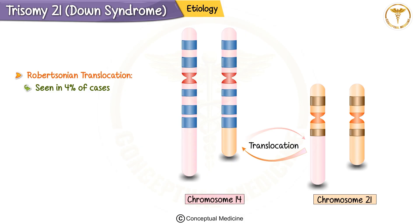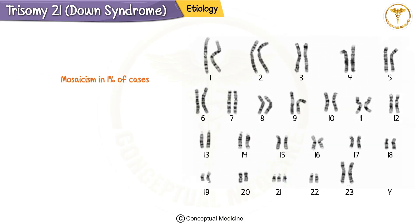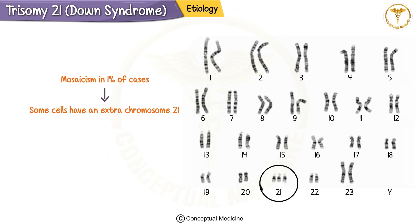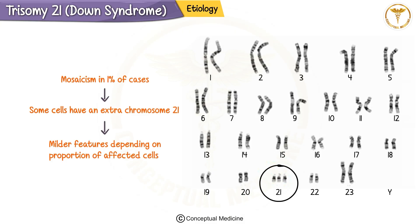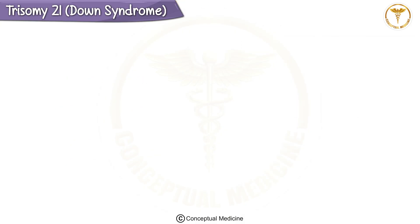Robertsonian translocation means part of chromosome 21 attaches to another chromosome, like chromosome 14. This form can be inherited, so parents might need genetic counseling. Lastly, we have mosaicism, which accounts for about 1% of cases. Here, some cells have an extra chromosome 21 while others are normal. Mosaicism can lead to milder features depending on the proportion of affected cells.